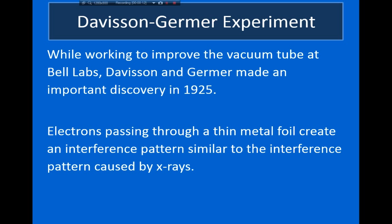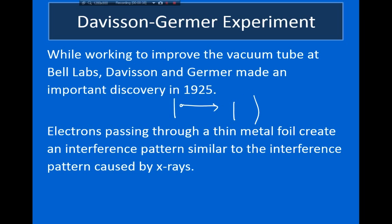In 1925, Davisson and Germer were experimenting with the vacuum tube, doing something very similar to what Lenard had done — shooting electrons from an emitter plate toward a collector plate. They discovered that if you look behind the collector plate, some electrons actually pass through and create an interference pattern. Remarkably, the interference pattern that shows up is exactly the same type you would get if you shined X-rays on a metal plate — the same type of interference pattern you get if you shine waves on the metal plate.